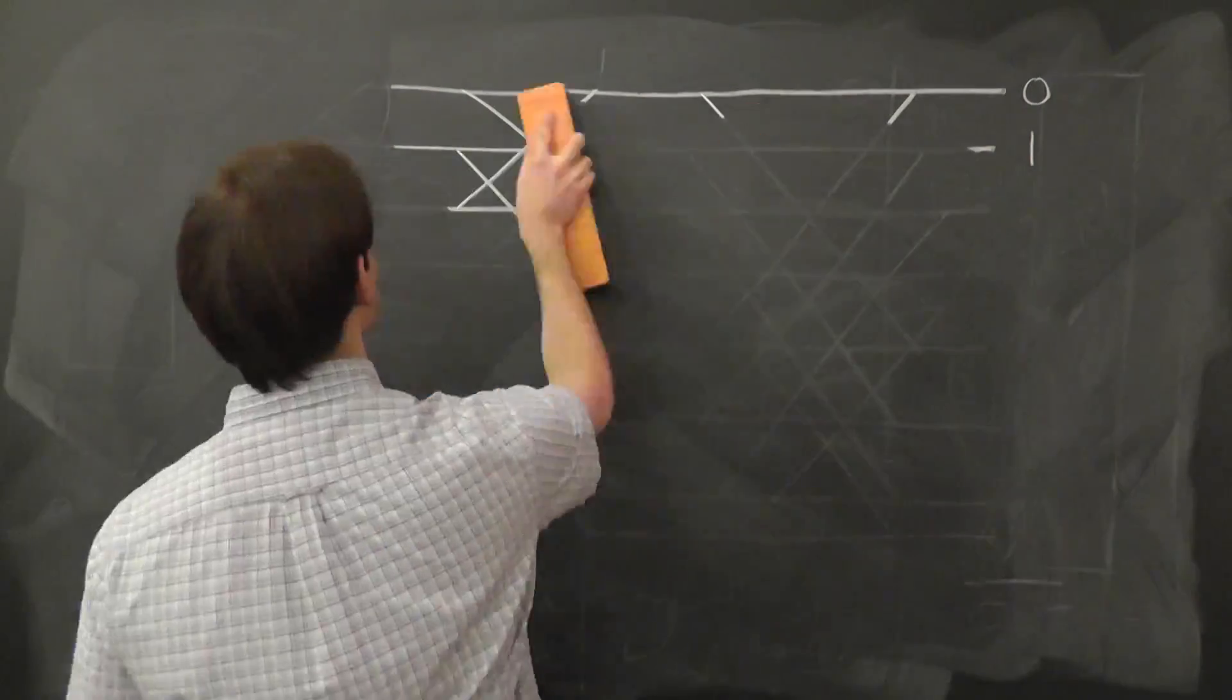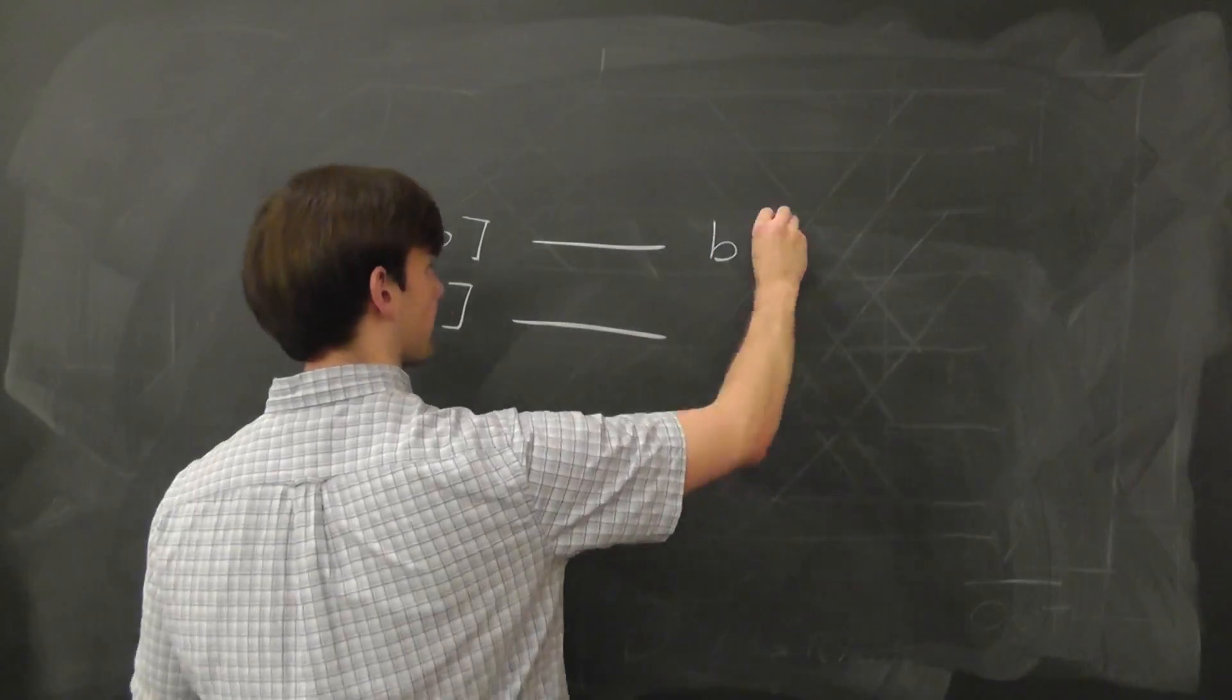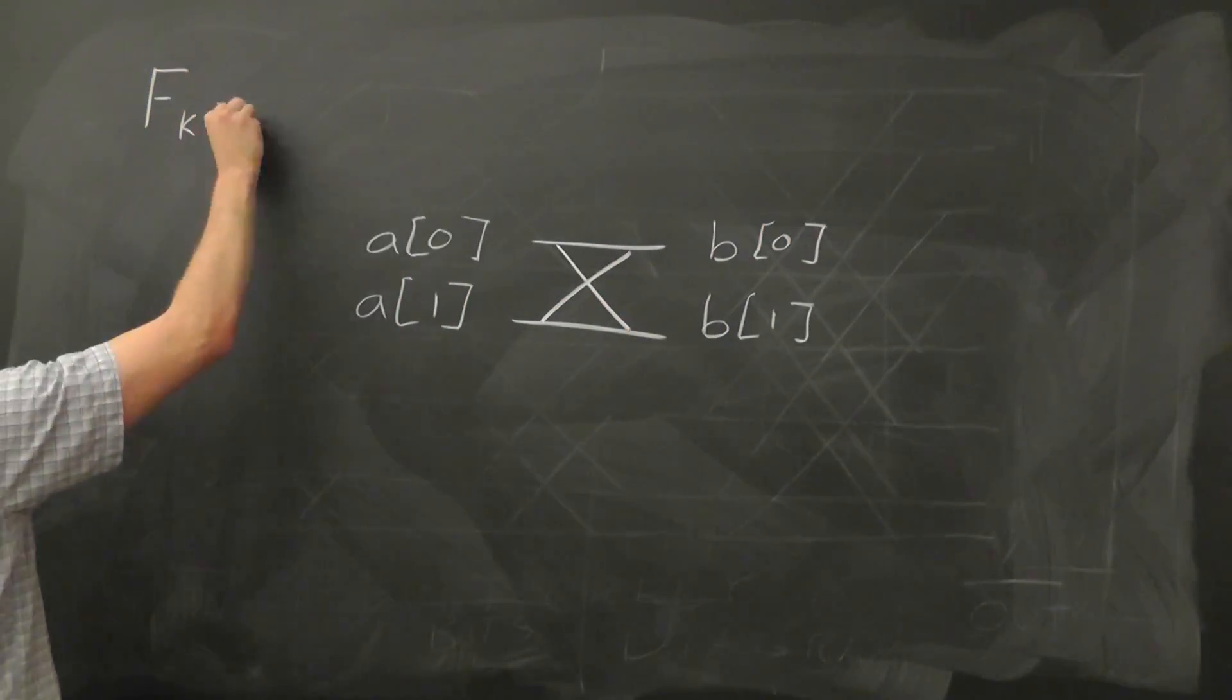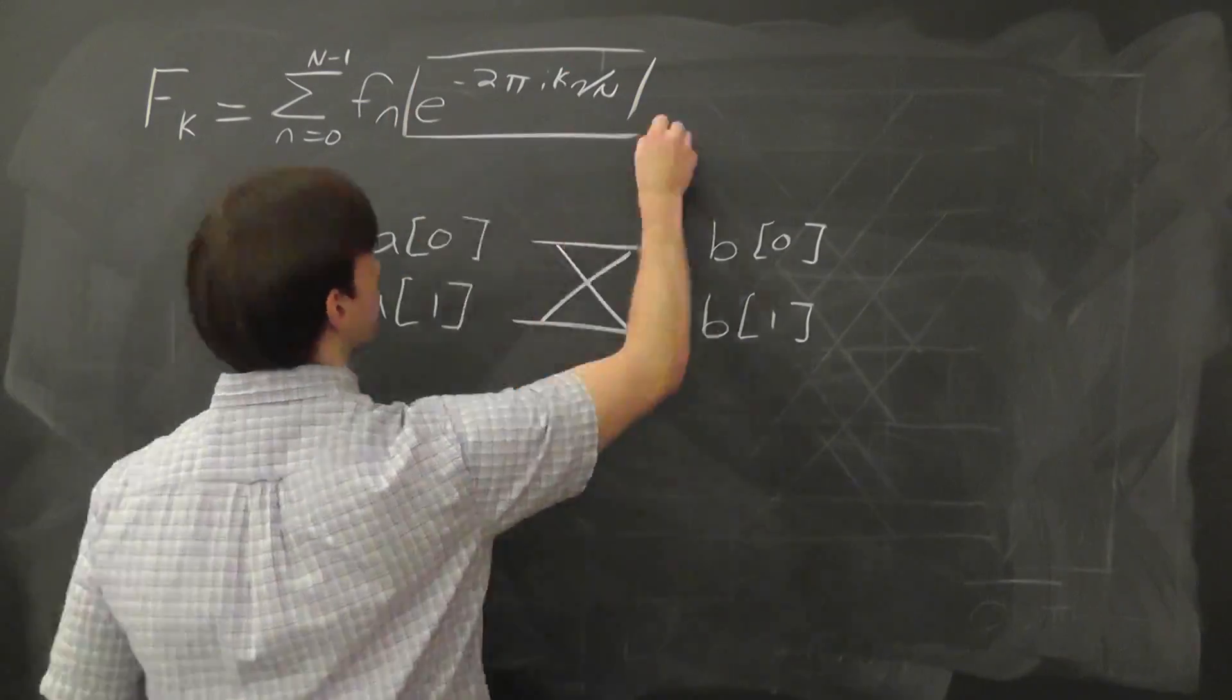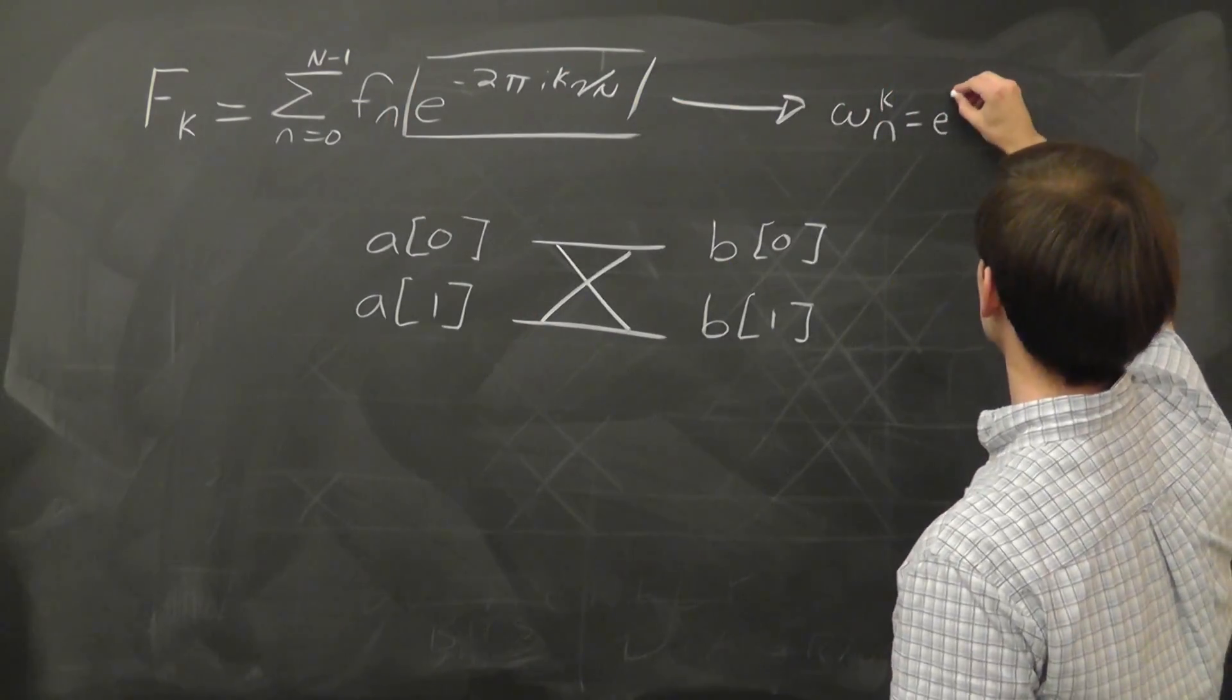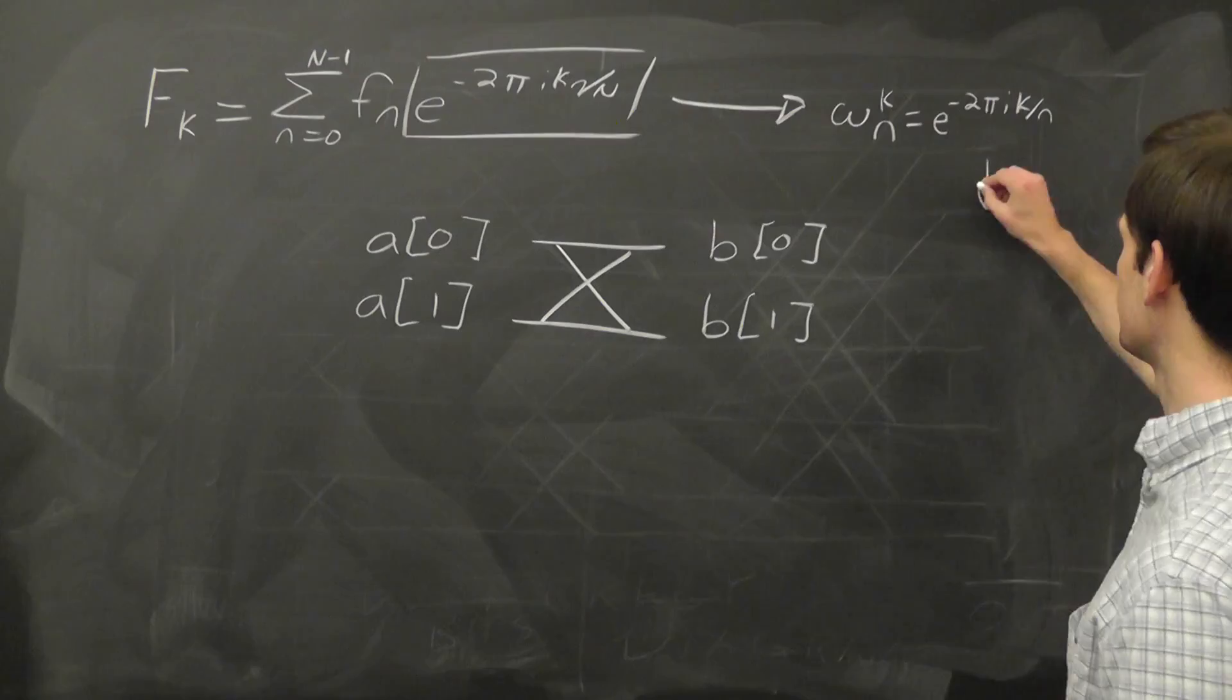Now let's look at the simplest butterfly and describe what it mathematically represents. Again, it's a mini discrete Fourier transform, so we're going to need an array of the e to the 2πik terms, which we'll define as omega.